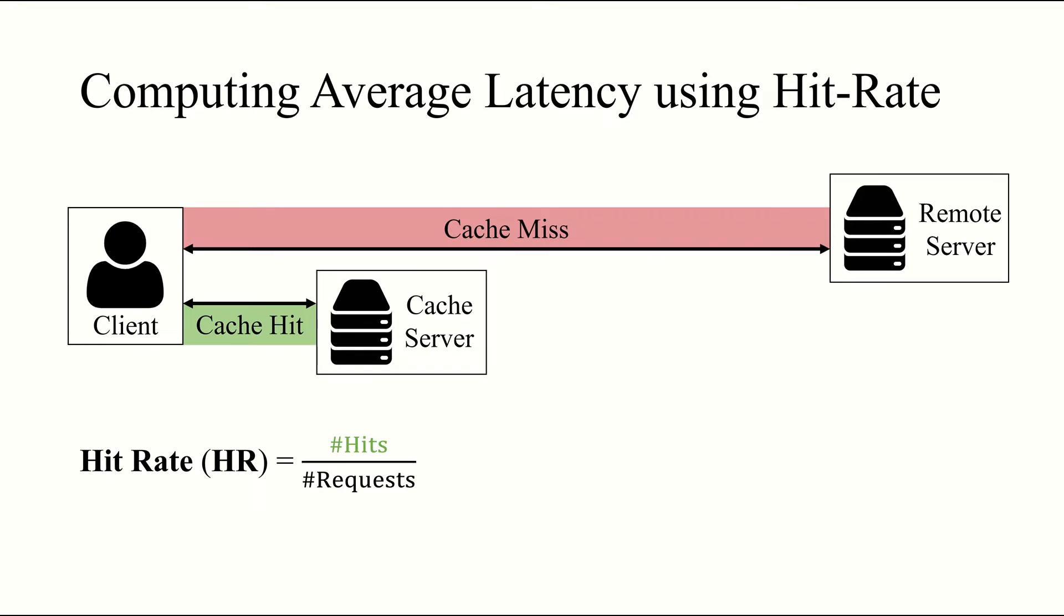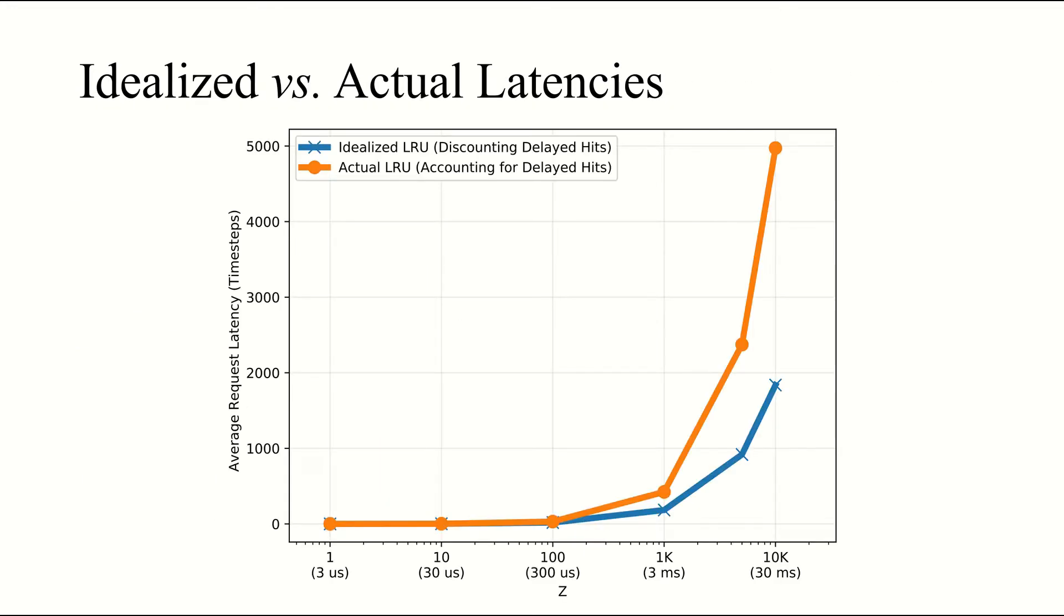Let's recall how our textbooks tell us to compute average latency using the cache hit rate. First, the hit rate is defined as the ratio of the number of hits to the total number of requests served by the cache. Then the average request latency is equal to the hit rate multiplied by the hit latency plus the miss rate, or 1 minus the hit rate, multiplied by the miss latency. So does this expression work? This graph depicts the behavior of two simulated models in the network setting. One that accounts for delayed hits, labeled actual and depicted in orange, and one that does not, labeled idealized and depicted in blue. On the y-axis, we have the average rate request latency. And on the x-axis, we sweep our Z parameter. We find that as Z increases, the latency estimates derived from hit rate quickly diverge from their actual values. At Z equals 10,000, we see that the error exceeds 60%.